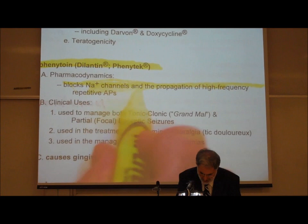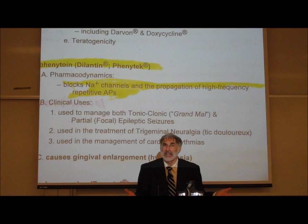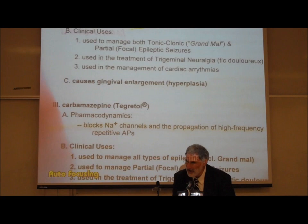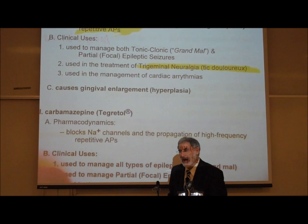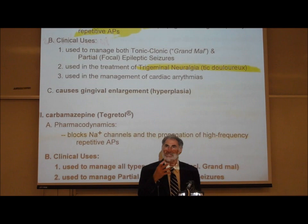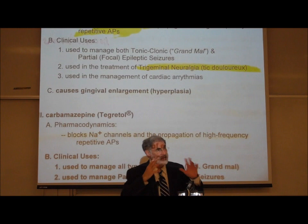Phenytoin works by blocking sodium ion channels in neurons, and therefore slows down the generation and conduction of action potentials — somewhat like a local anesthetic. It's used to control different types of epileptic seizures including grand mal, but also other purposes: it is used to treat trigeminal neuralgia, also known as tic de la rue, where people have chronic pain from abnormal activity in the trigeminal nerve, causing all this flow of sensory impulses from the face into the brain.